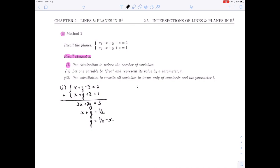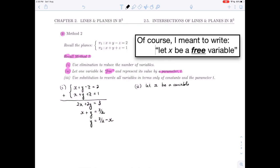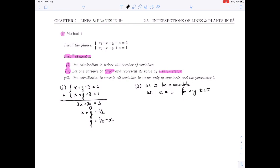Now the next step, step 2, says to let one variable be free. That's probably something new to you. I'll explain that in a moment. And represent its value by a parameter t. The way I've set things up here, it makes sense to let x be a free variable. That means I want to let x be represented by a parameter t for any t in R. That means since we've solved for y in terms of x, y is 3/2 minus t.